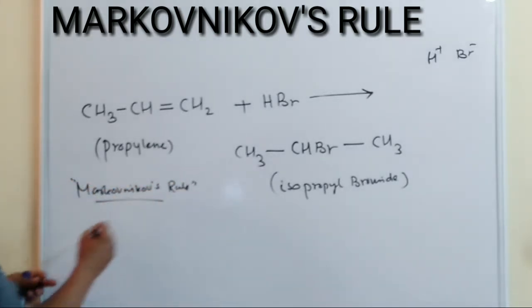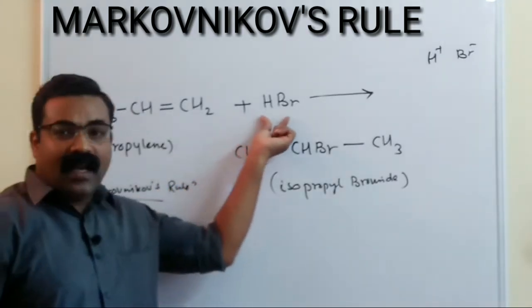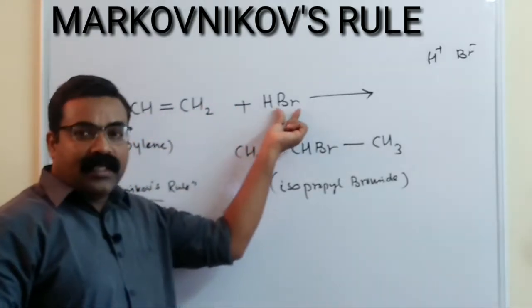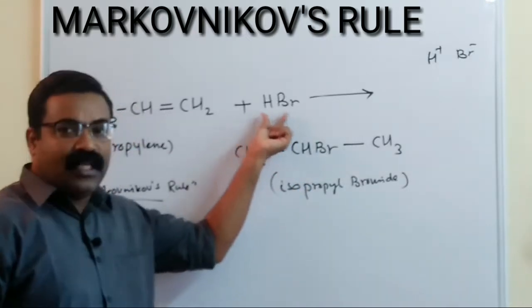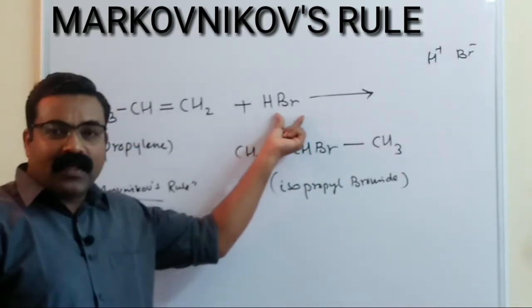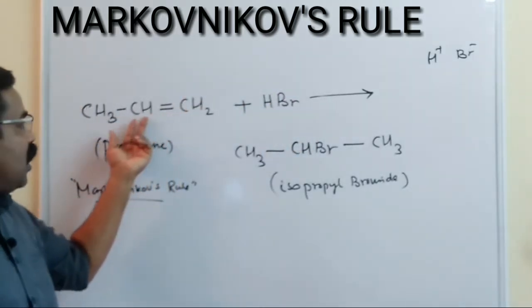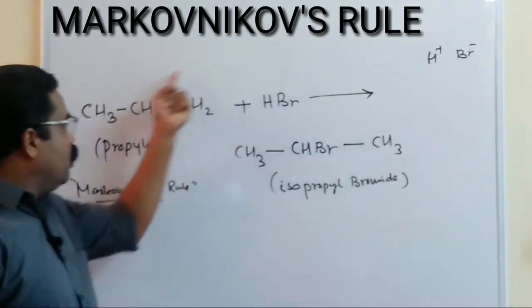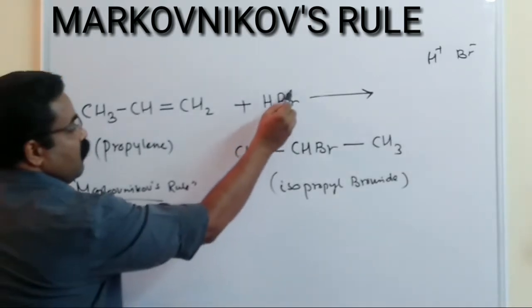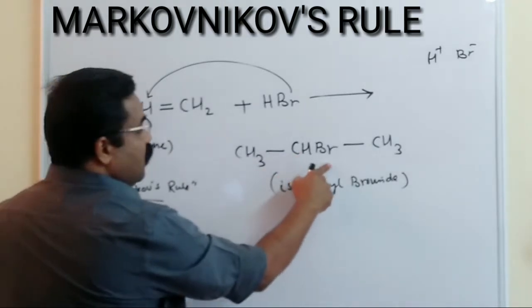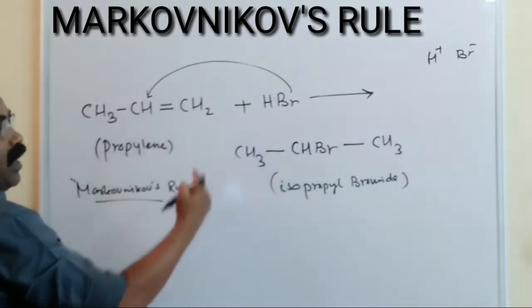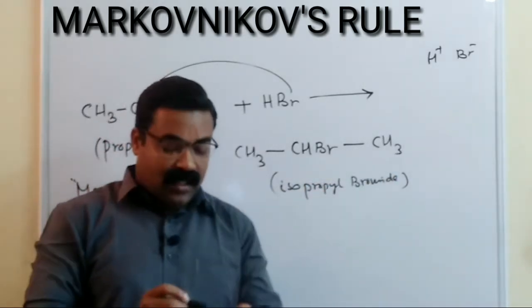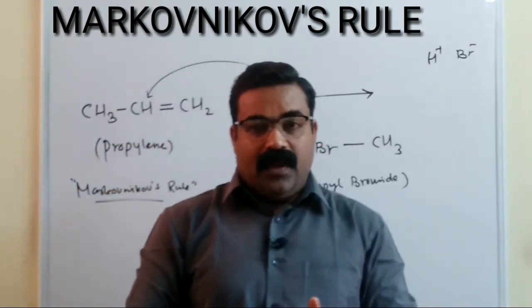To summarize Markovnikov rule: whenever a hydrogen halide reacts with an unsymmetrical alkene, the negative part of the addendum — here Br⁻ from HBr — will go to that carbon which has the less number of hydrogen atoms. So Br goes to the carbon with fewer hydrogens, forming CHBr, and H completes the valency of the other carbon, giving CH3. The product is isopropyl bromide.